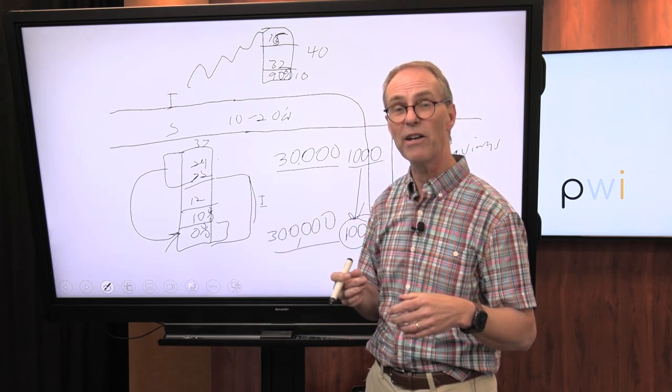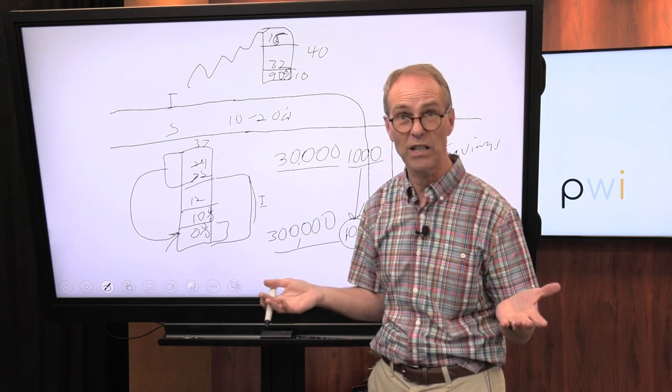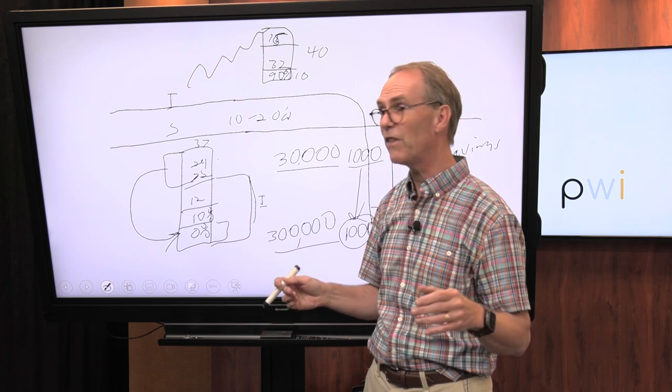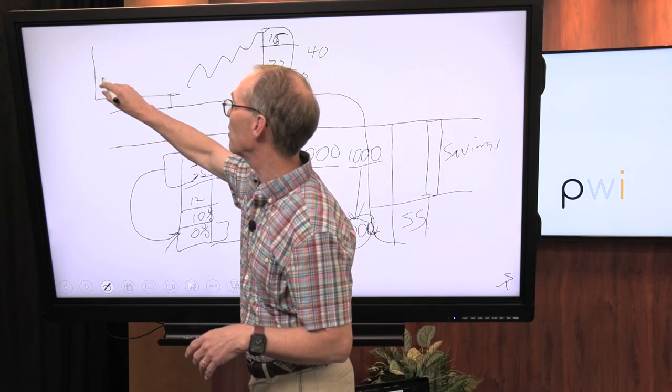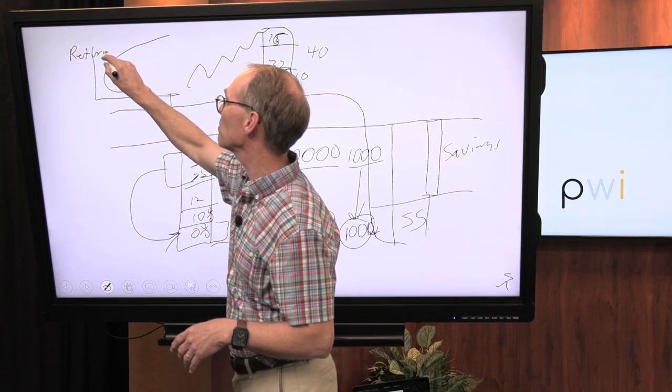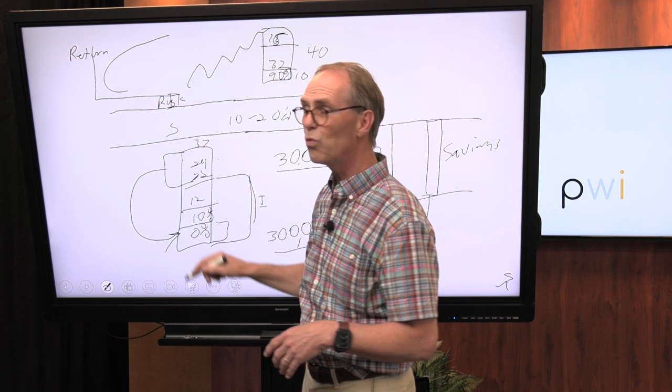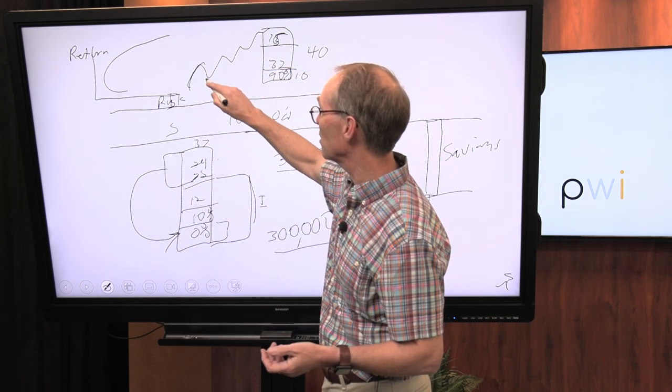That is why the stock market has been the greatest protector against inflation historically. So what we do is a balancing act when we choose investments. We say, 'okay, over here I've got return or expected returns, and here I've got risk.' Risk from an academic standpoint is how much of this up and down we might see.